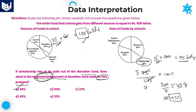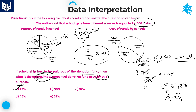There's also a shortcut: since both scholarship (15%) and donation (35%) are percentages of the same total 500 lakhs, you can directly compute 15/35 × 100 = 3/7 × 100, which gives the same result. This direct approach takes around 30 seconds to calculate the answer.